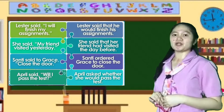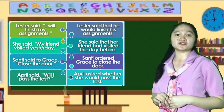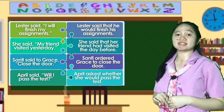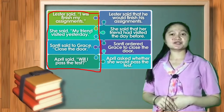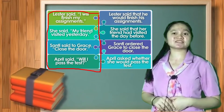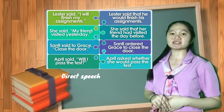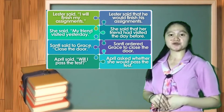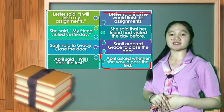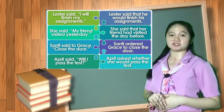April said, 'Will I pass the test?' April asked whether she would pass the test. The group of sentences on the left side of your screen are the direct dialogues or direct speech of the speakers, with quotation marks. While the group of sentences on the right part of your screen are the reported or indirect speech.